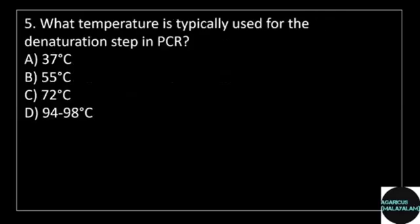5th question. What temperature is typically used for the denaturation step in PCR? Answer options. Option A: 37 degrees Celsius. Option B: 55 degrees Celsius. Option C: 72 degrees Celsius. Option D: 94 to 98 degrees Celsius.